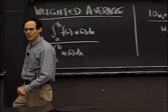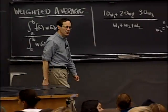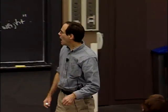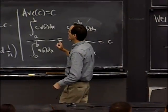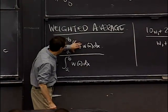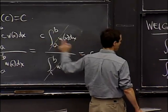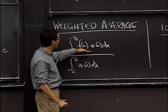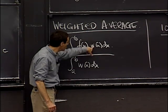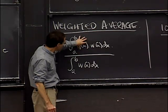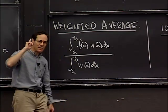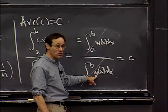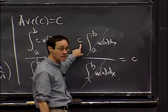A student notes that when computing the weighted average you can factor out c, but you cannot factor out f in general. That's exactly right and is the whole point. The weighted average is interesting precisely because in general you have to do two different integrals to figure it out. When f happens to be a constant, those integrals cancel and you don't even need to calculate them. It's a very special property of a constant that it factors out.